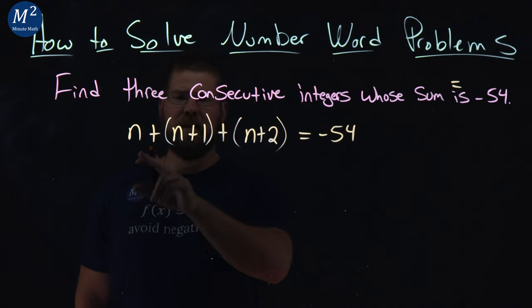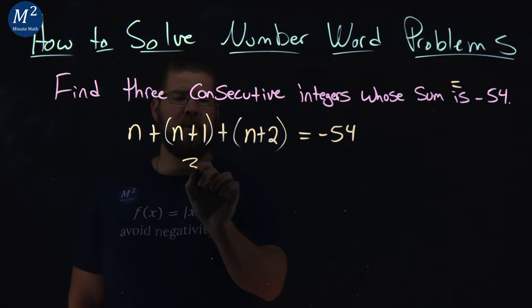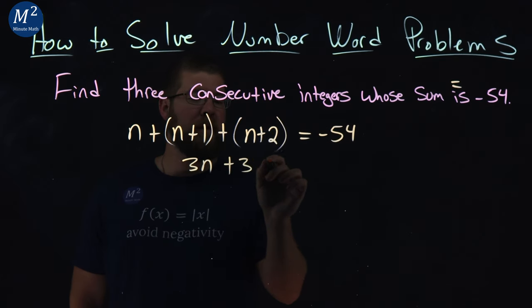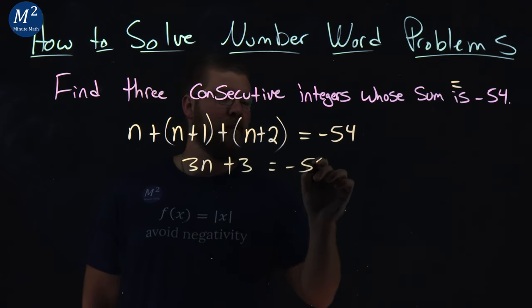Let's simplify this. How many n's do we see? One, two, three - we have 3n. One plus two gives us three as well. So 3n plus 3 equals negative 54.